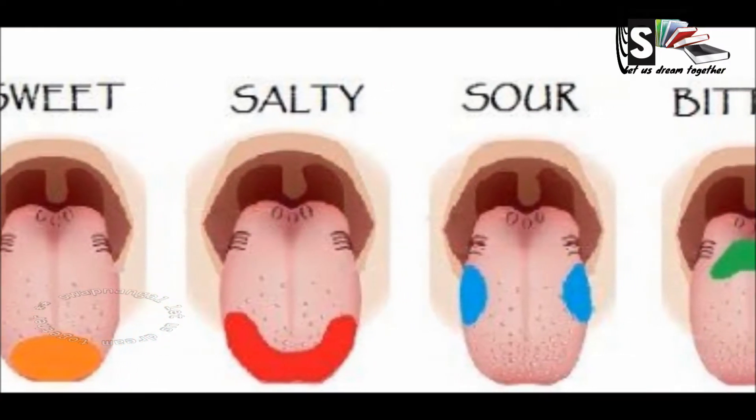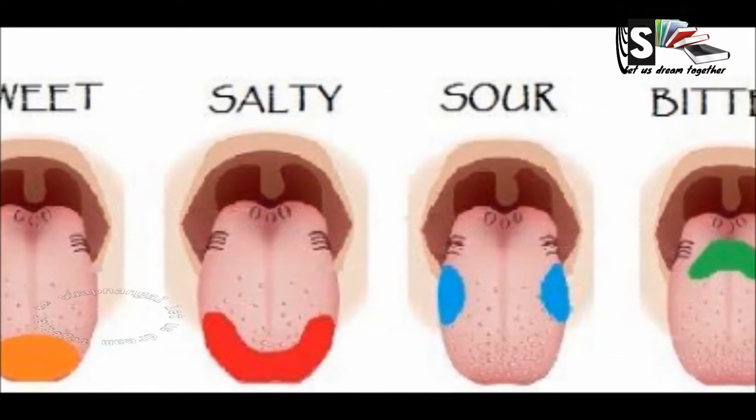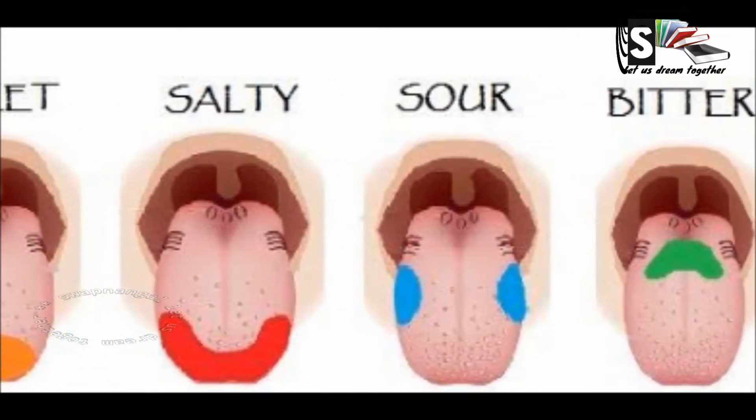The human tongue can sense four different tastes: salty, sweet, sour and bitter. In the past, being able to tell between these tastes helped us to survive. For example, we would eat a ripe apple because it would taste sweet and throw away an unripe one because it tastes sour.